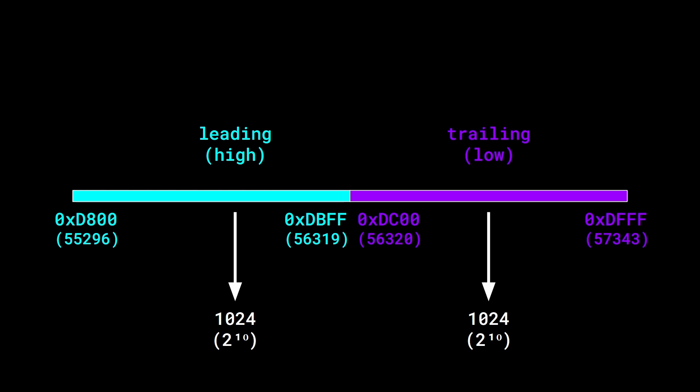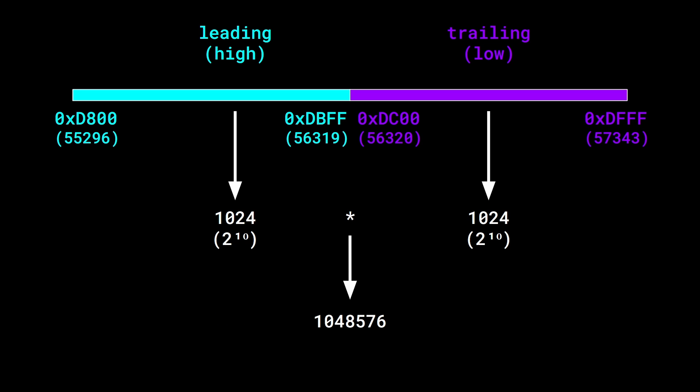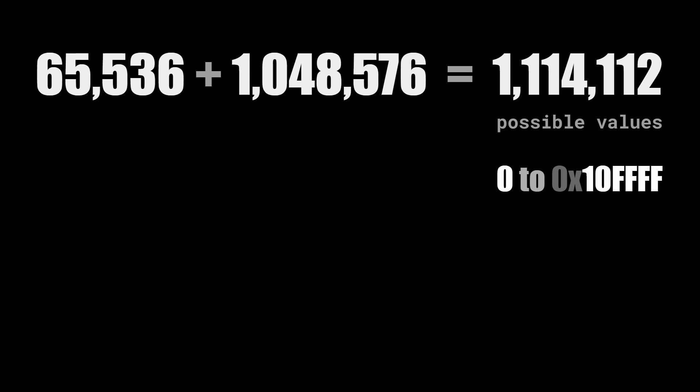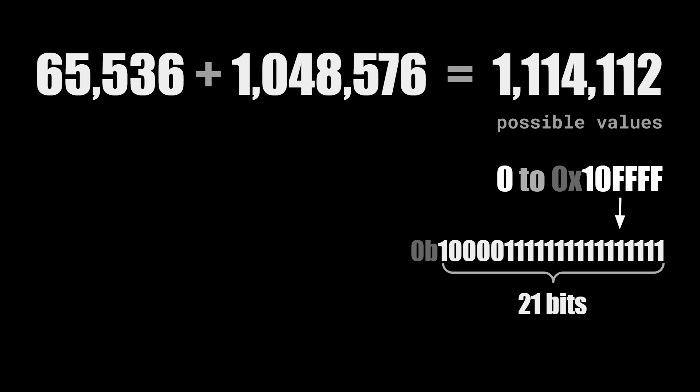Each part of the surrogate block can be represented by 10-bit long numbers. In UTF-16, we create a pair of surrogates by taking one of each, which means we can encode over a million characters. If we add up the initial 65,536 of the 16-bit block to that number, we get 1,114,112. So we can count up to the number 0x10FFFF, which can be represented by 21 bits.